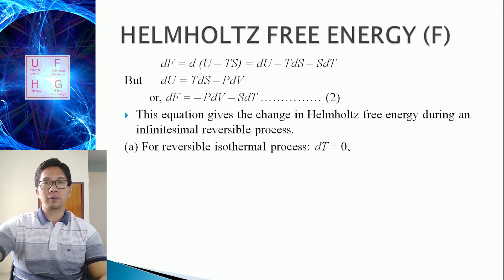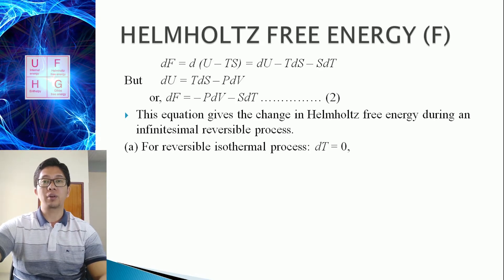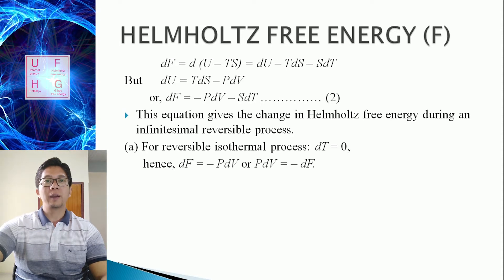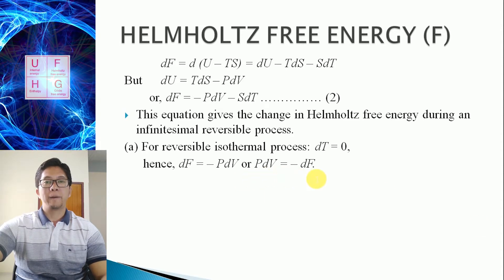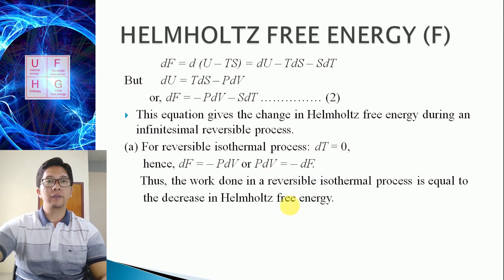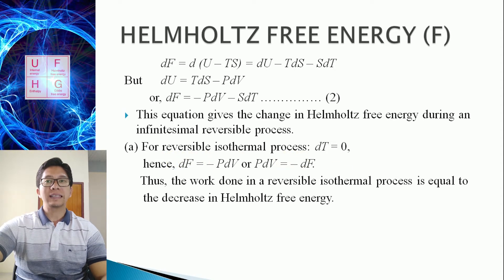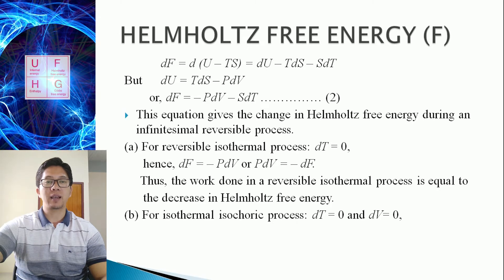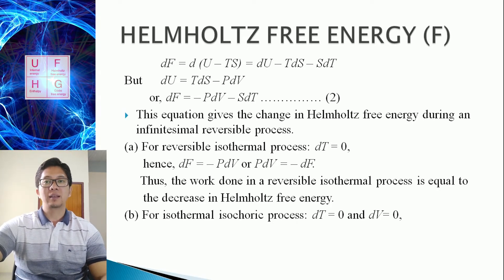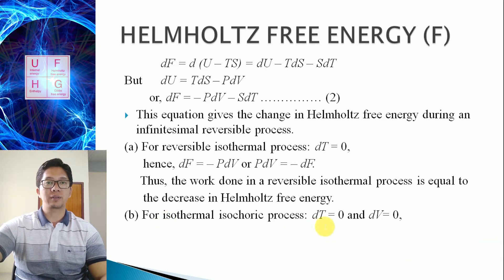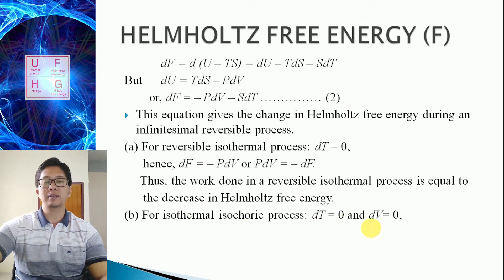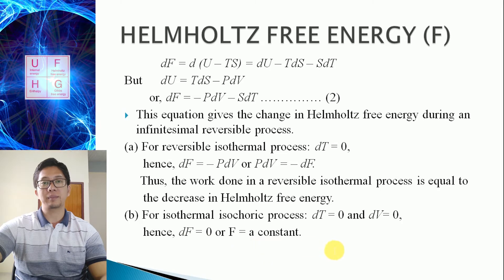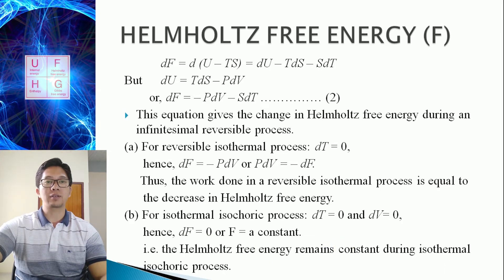For a reversible isothermal process, temperature is constant so DT equals zero. Then DF equals minus PDV, or PDV equals minus DF. This means the work done equals the decrease in Helmholtz free energy. For an isothermal isochoric process, DT equals zero and DV equals zero, so DF equals zero — Helmholtz free energy remains constant for an isothermal isochoric process.